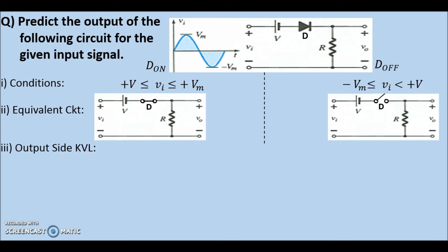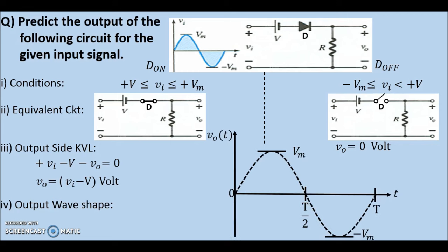Step 5, we redraw the input waveform with dashes instead of a solid line. Step 6, we mark the decision making voltage on the graph. Step 7, we mark the dOn and dOff regions on the graph. Step 8, now using the output side KVLs obtained in step 4, we draw the final output waveshape.